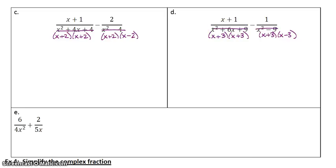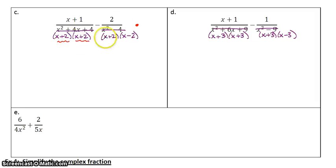Now we're going to do the same process as before. Step 1, I factored. Step 2, now I'm looking at what is lacking. The left denominator actually has two x plus 2s, whereas the right denominator only has one. So to make the bottoms match, this one needs another x plus 2.